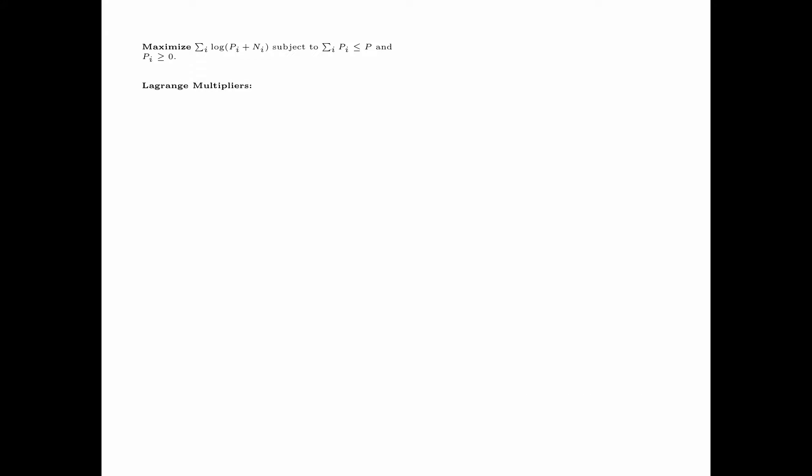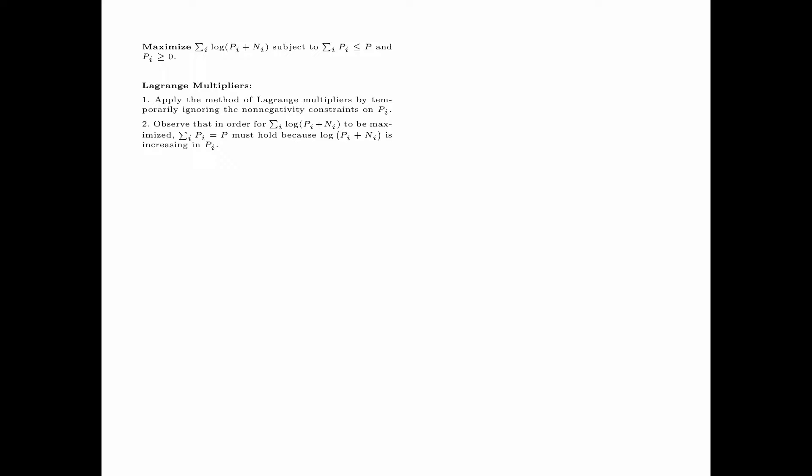Consider maximizing the objective function summation i of log of pi plus ni, subject to the constraints: summation i of pi is less than or equal to p, and pi is greater than or equal to 0. We first attempt to solve this maximization problem using Lagrange multipliers, by temporarily ignoring the requirement that pi must be greater than or equal to 0. Observe that in order for summation i of log pi plus ni to be maximized, summation i of pi must equal p, because log pi plus ni is increasing in pi. Therefore we set summation i of pi equals p.